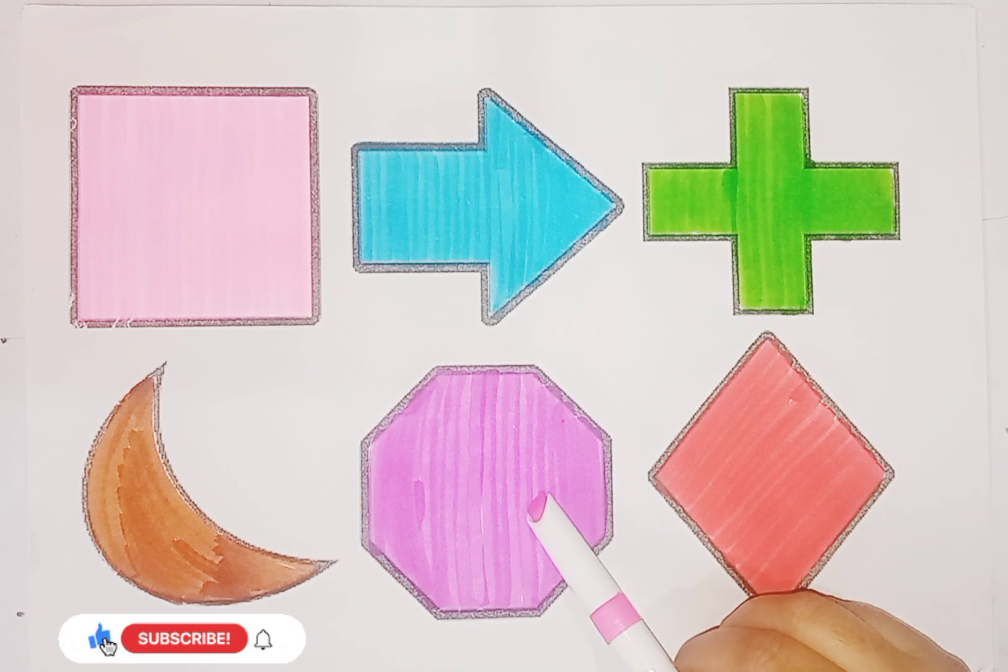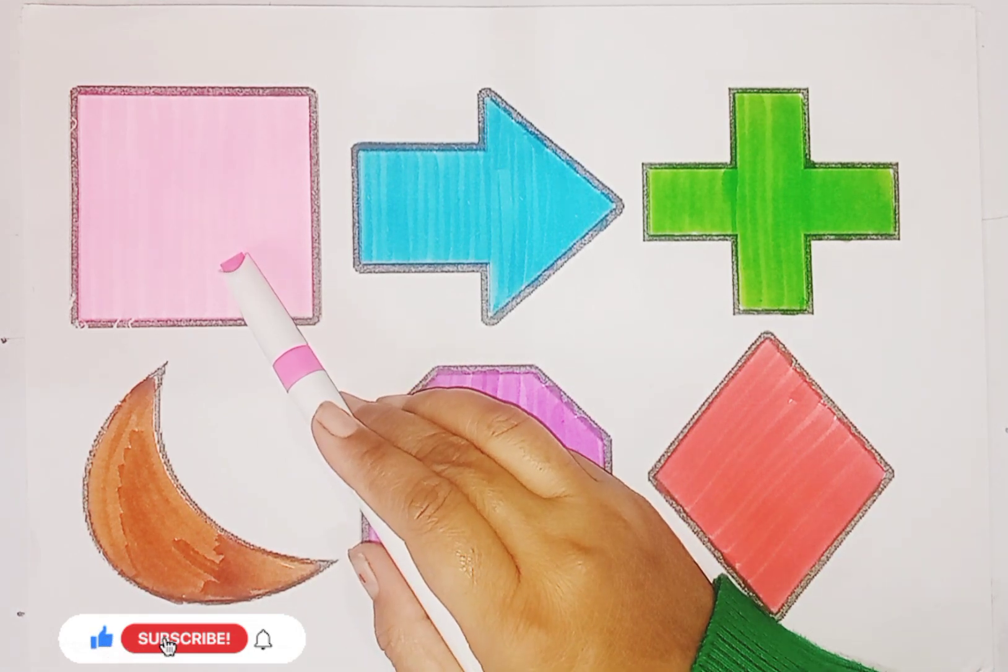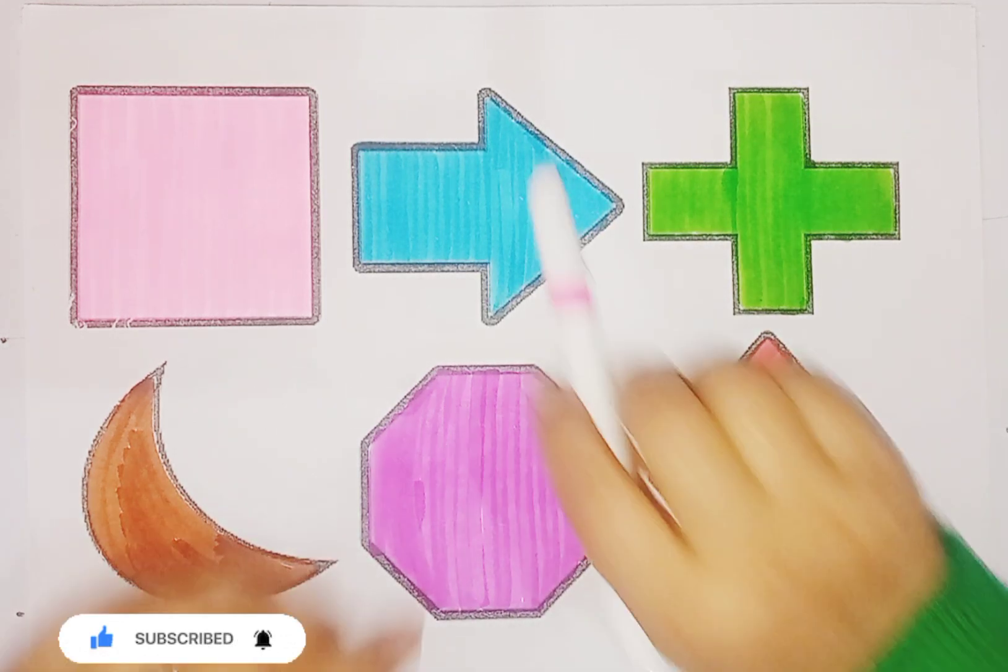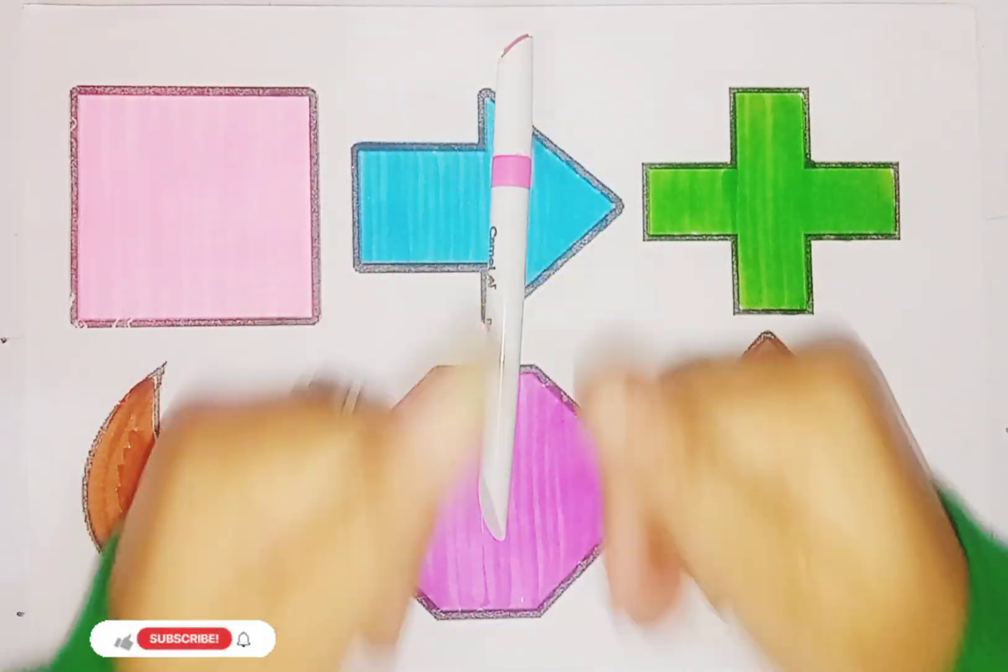So kids, today we learned shapes: square, arrow, cross, crescent, octagon, and rhombus. Bye-bye kids. Please like and subscribe.